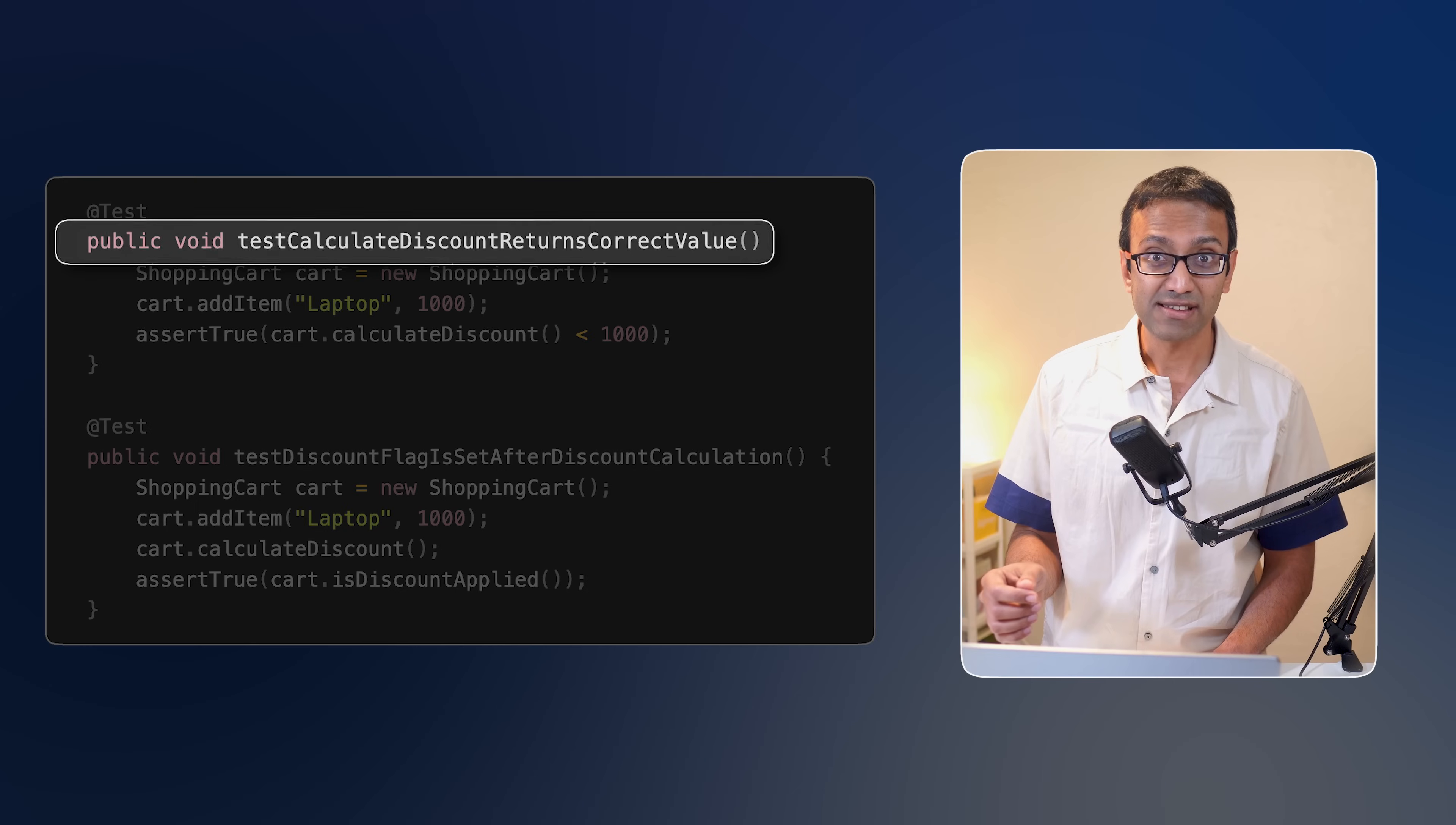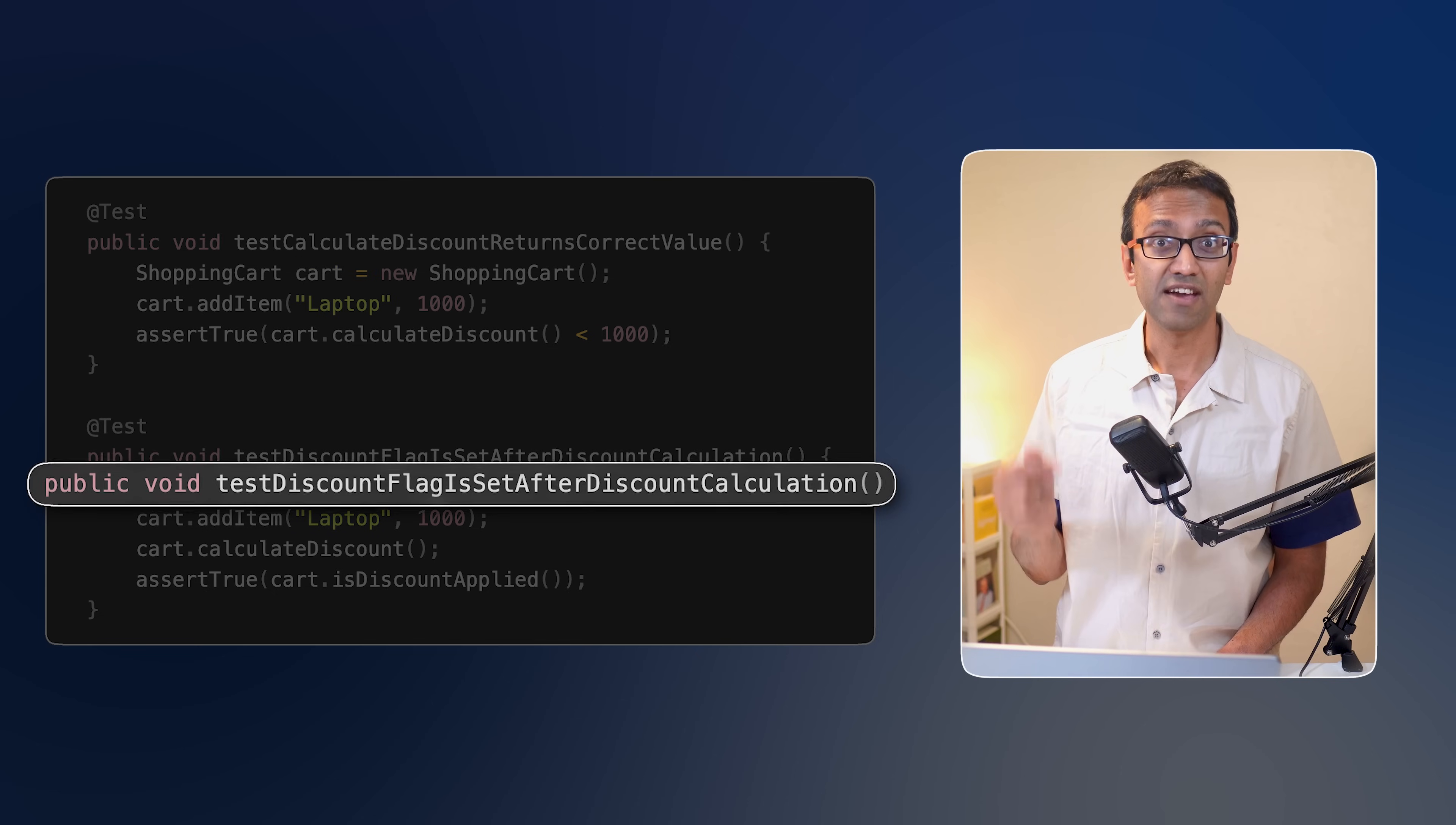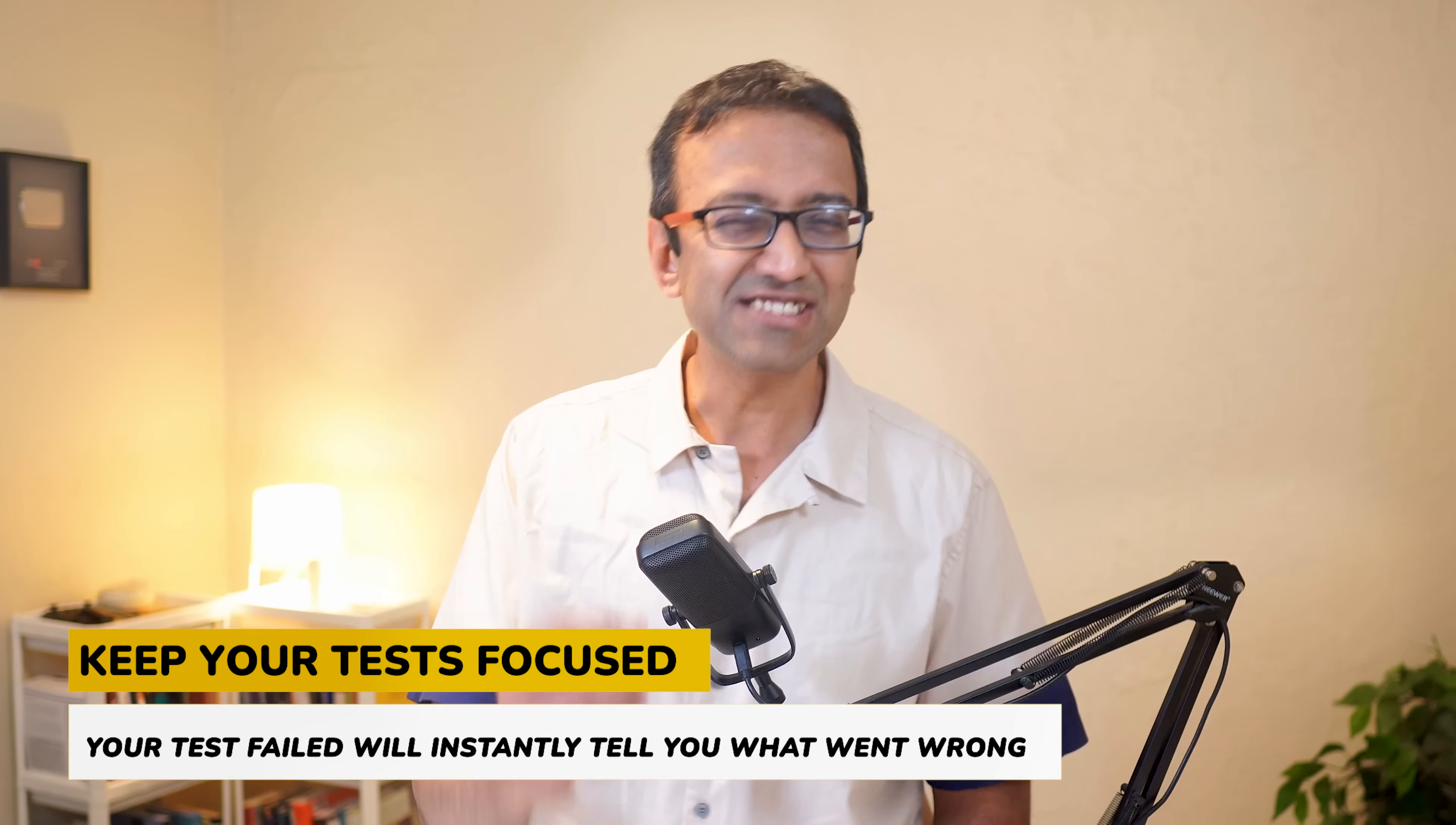We are setting ourselves up for a mini investigation every time something goes wrong. Now let's split this up the right way. We have a test calculate discount returns correct value, which only checks the value returned by the discount. And then we have another test which checks if the flag is set and it's testing only that. Each test focuses on one aspect. If test calculate discount returns correct value fails, you know that the issue is with the discount calculation and not in the setting of the flag. We've eliminated the guesswork and pinpointed exactly where our problem lies. That's the power of focused tests. So keep your test focused and watch your test failures instantly tell you exactly what went wrong.